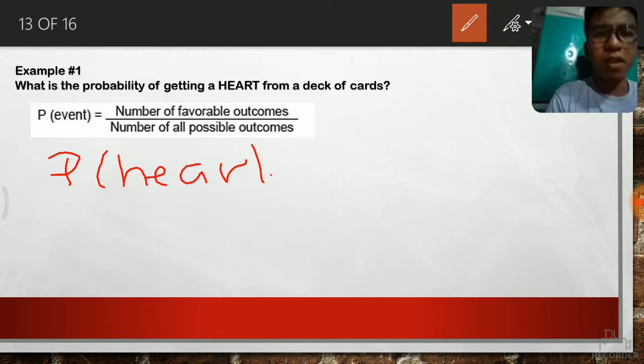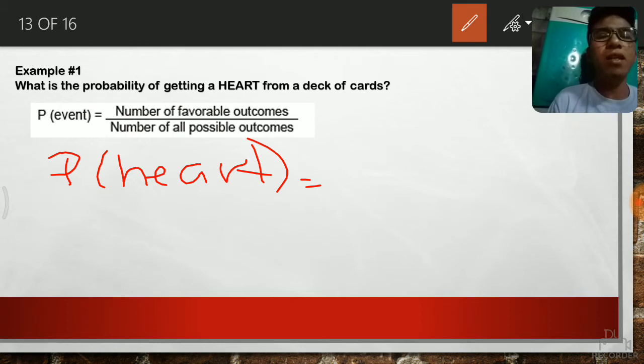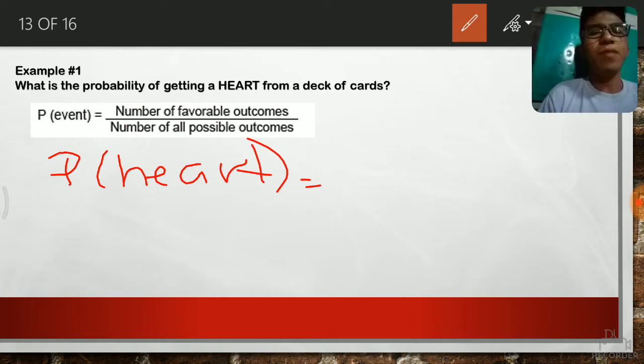This is our event. In our formula, number of favorable outcomes all over the number of possible outcomes. So let's try. When we have one deck of cards, without the joker, the count of our cards is equal to 52 pieces. So how did it become 52?